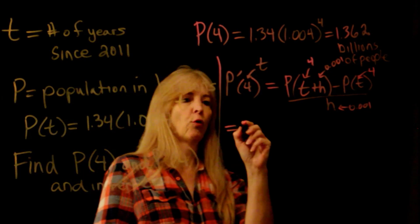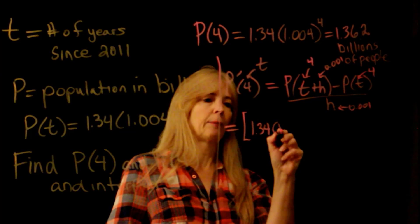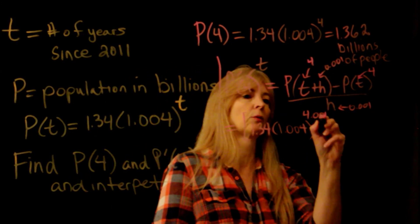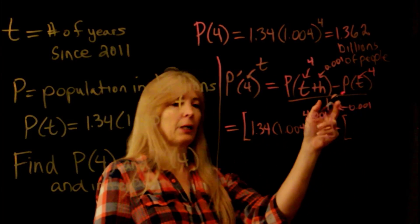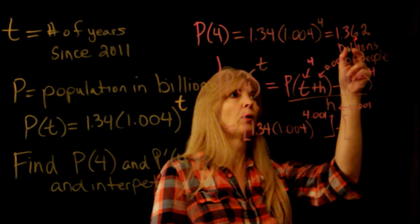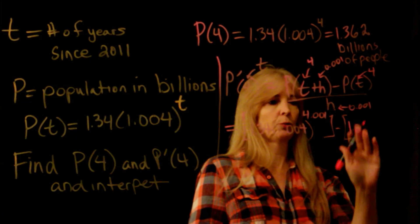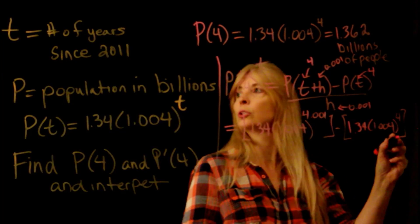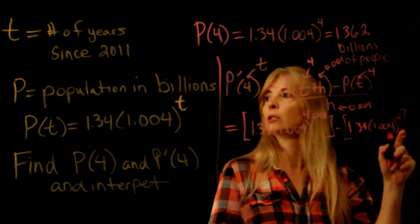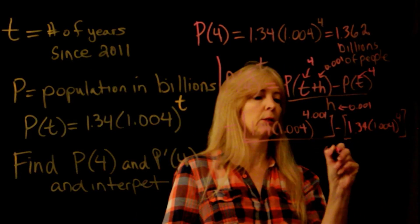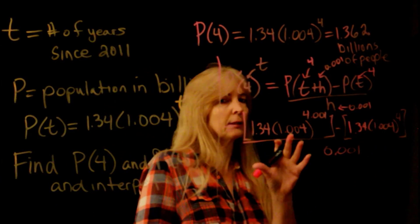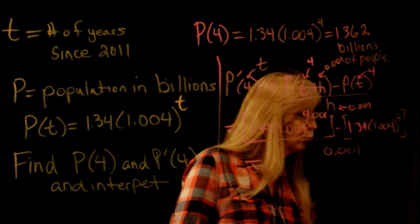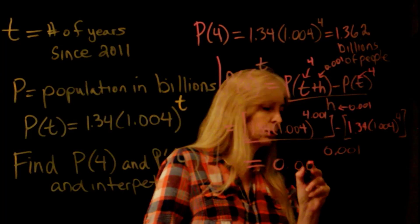Going back to my formula: 1.34 times 1.004 raised to the 4.001 power, minus 1.34 times 1.004 raised to the 4th power, all over 0.001. You need to be careful when you put this in your calculator — if you round decimals, the top will come out zero. Keep all the decimals you can, and you should get something like 0.00542.